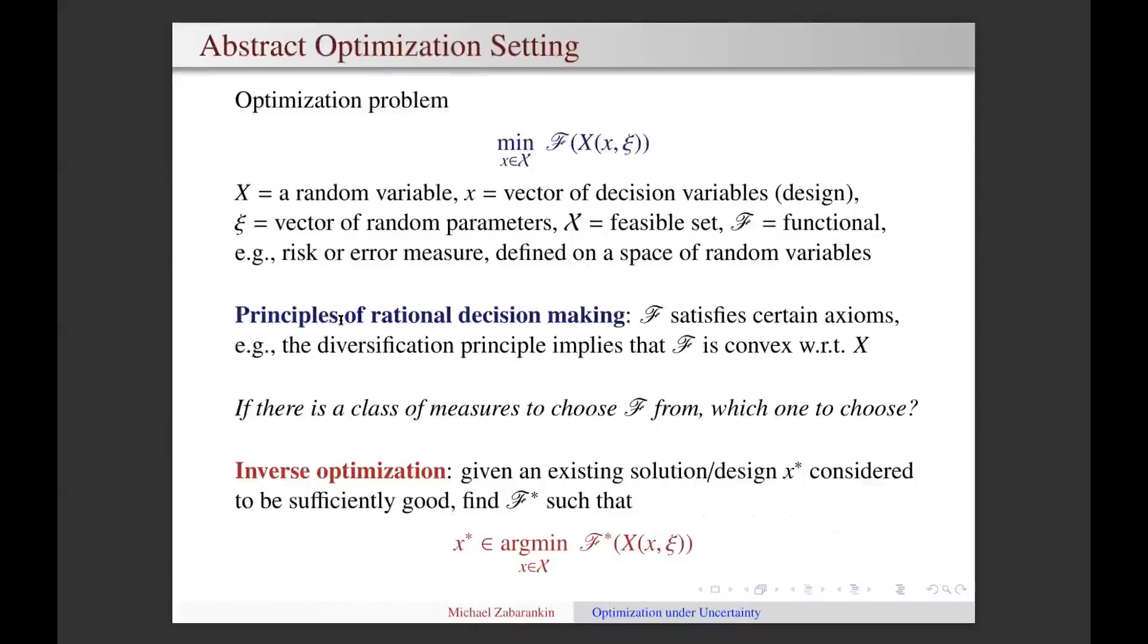For simplicity, let's consider the following optimization problem. In many applications, decision variables and random parameters come together in the form of a single random variable X. For example, in regression analysis, the random variable X is the error of approximation of a dependent random variable by a linear combination of independent random variables. In this case, the independent and dependent random variables are random parameters and regression coefficients are decision variables.